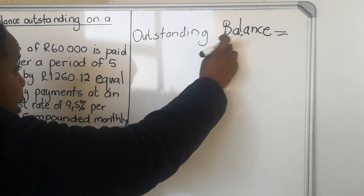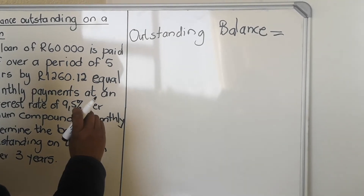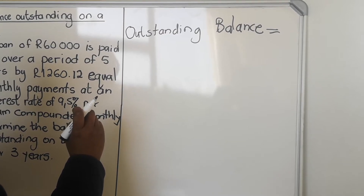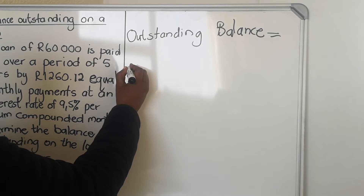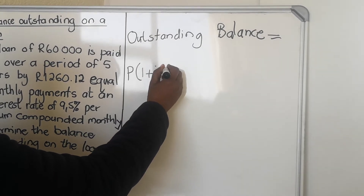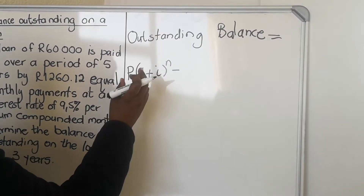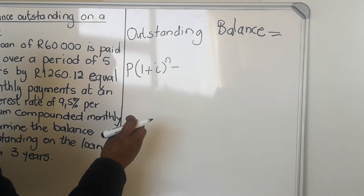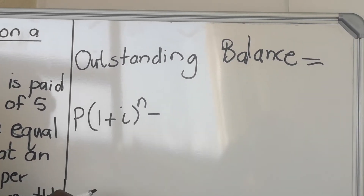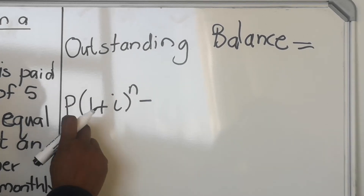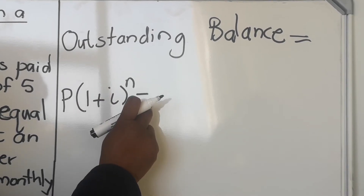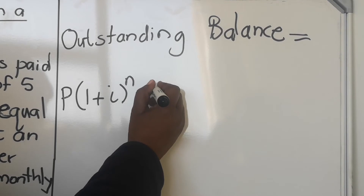So you write 'outstanding balance' and you're going to use two formulas: the Grade 11 formula for compound interest and the Grade 12 formula for future value. Your outstanding balance equals the Grade 11 compound interest formula minus the Grade 12 future value formula. Both formulas are on your formula sheet — please don't write them from memory because your head will not be in order during the exam. Take the formula sheet and copy them out.